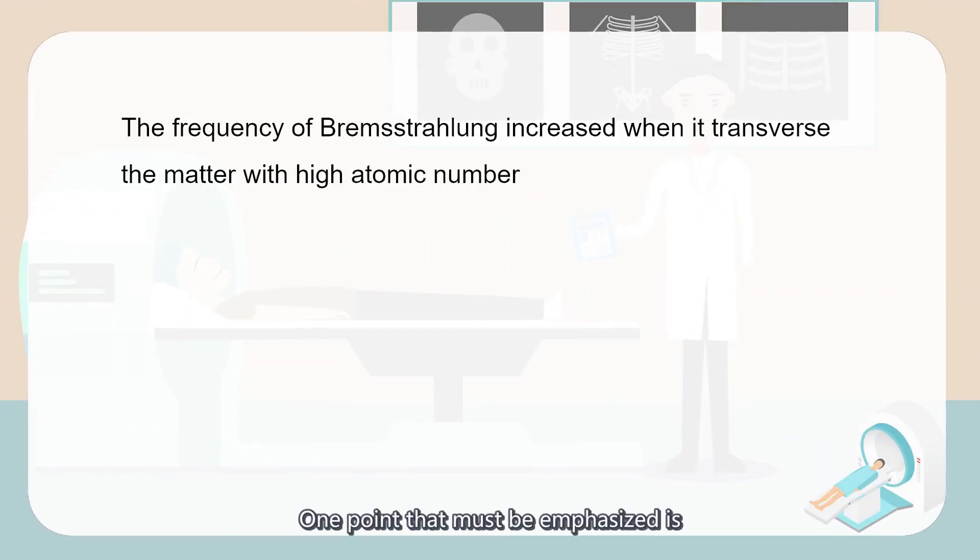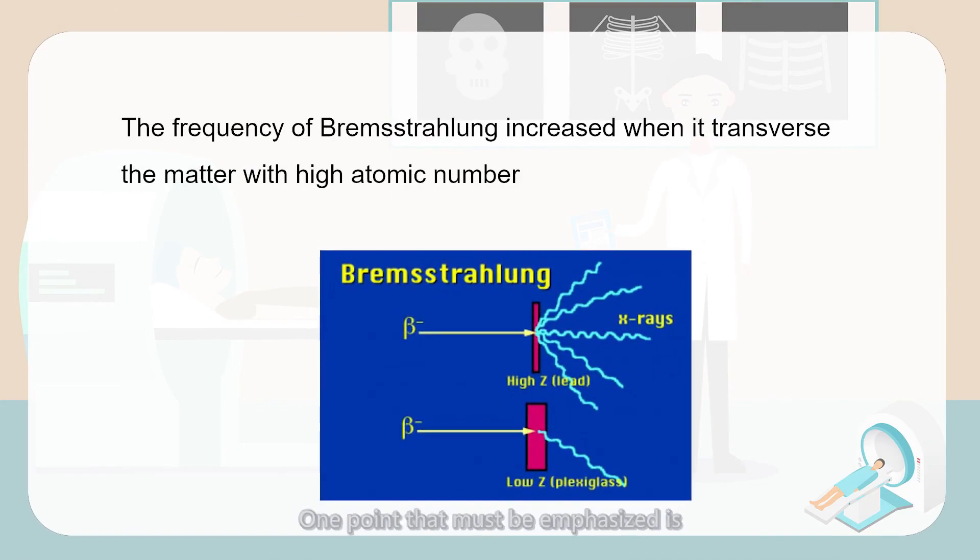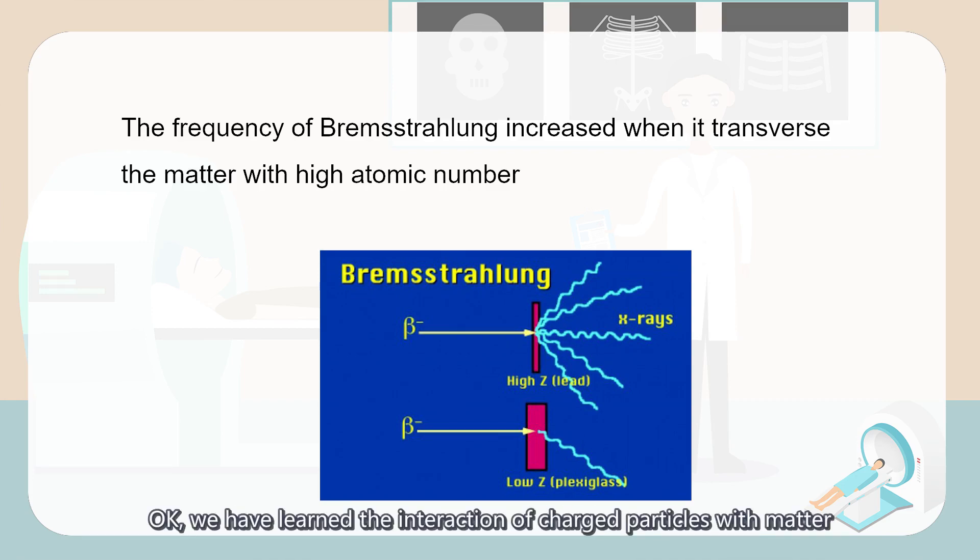One point that must be emphasized is that the frequency of Bremsstrahlung increased when it traverses the matter with a high atomic number. Okay, we have learned the interaction of charged particles with matter.